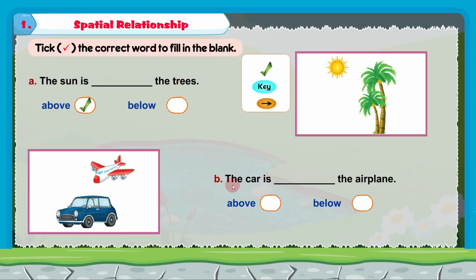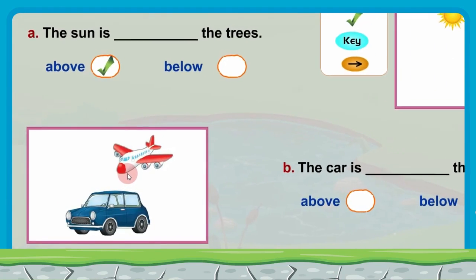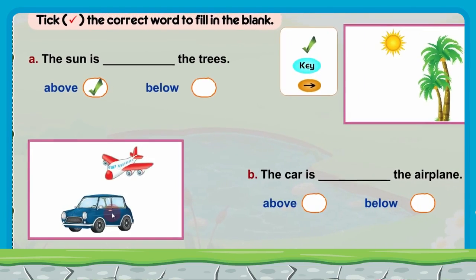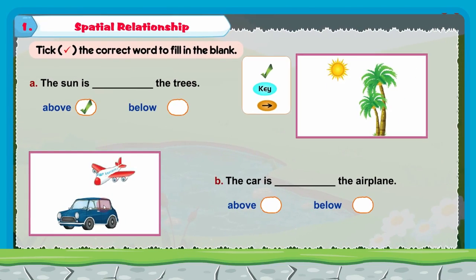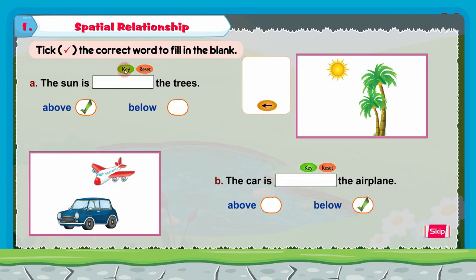Now the B part: the car is dash the aeroplane. Two options — above and below. Let us look at the picture. This is the car and this is the aeroplane. The car is below the aeroplane, so we will tick the below option. The sun is above the trees and the car is below the aeroplane.